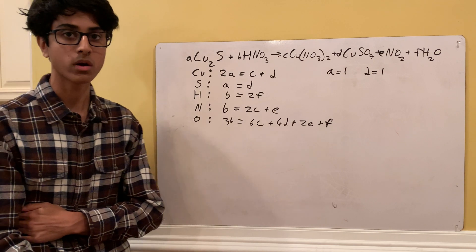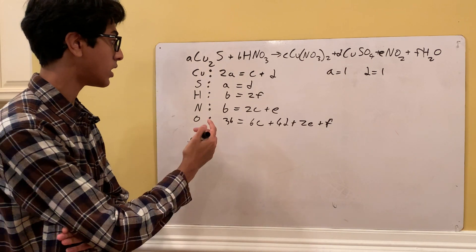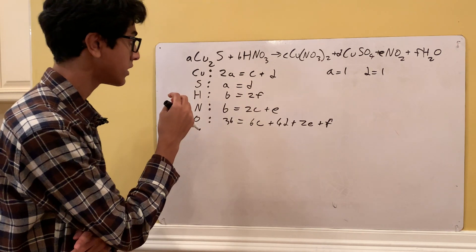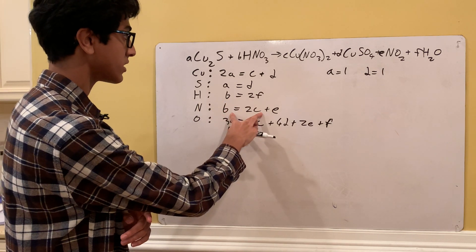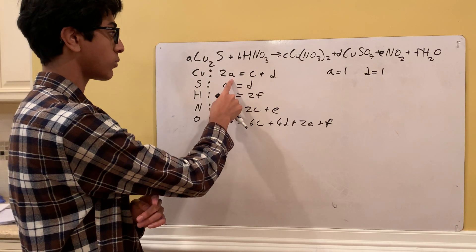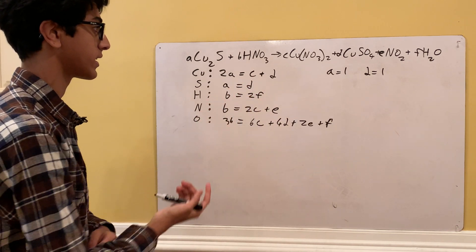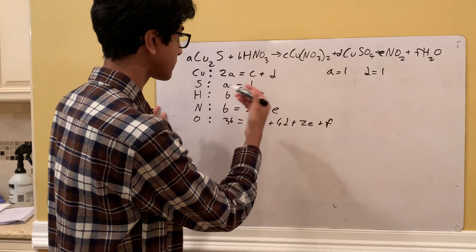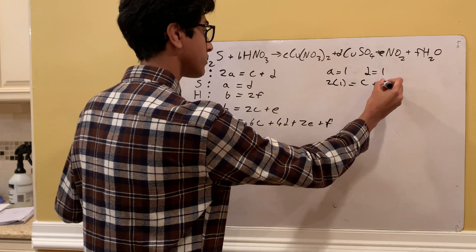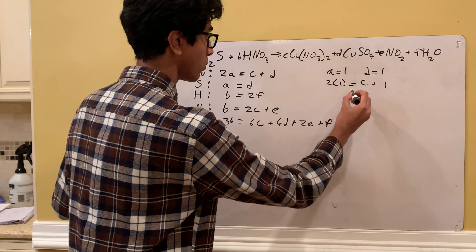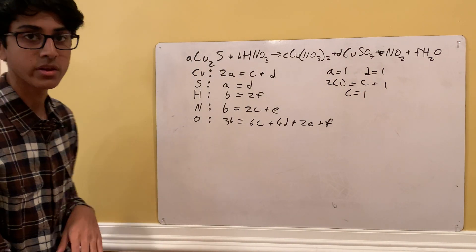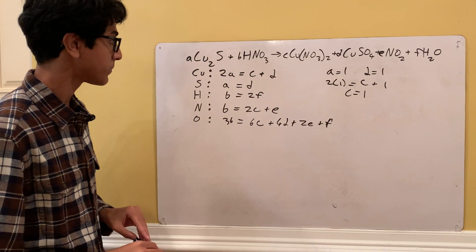Now with A and D known, let's see what else we can find. The Cu equation has A, C, and D — plugging in A=1 and D=1: 2(1) = C + 1, so C = 1. We now have A, D, and C all equal to 1 — a pretty fast start, but those were the easy ones.